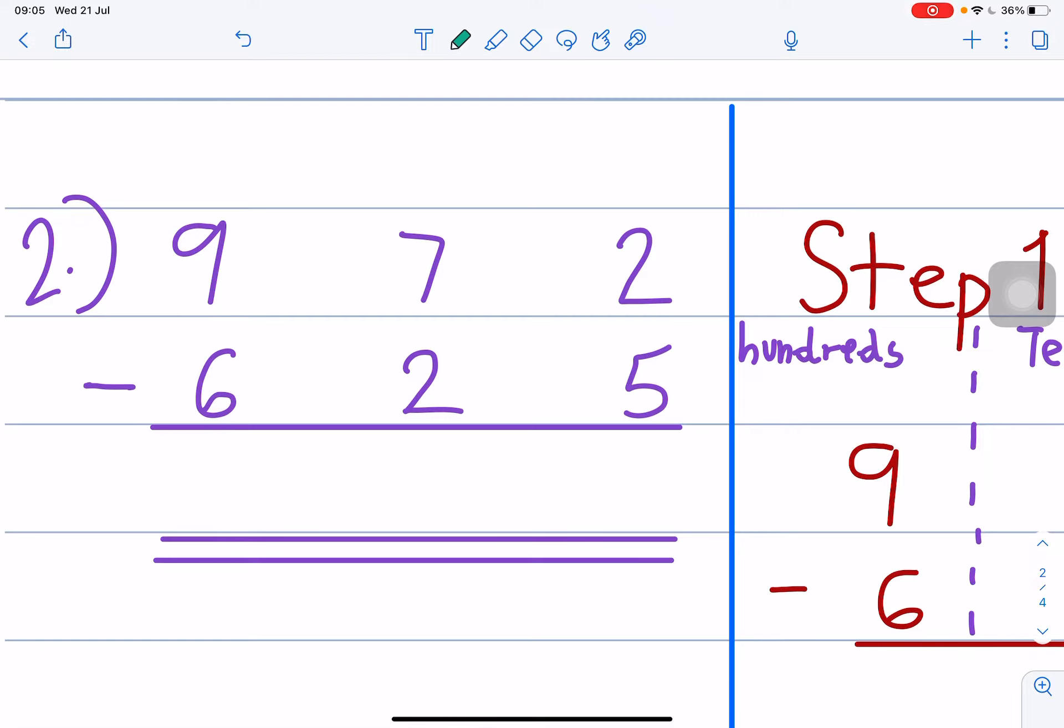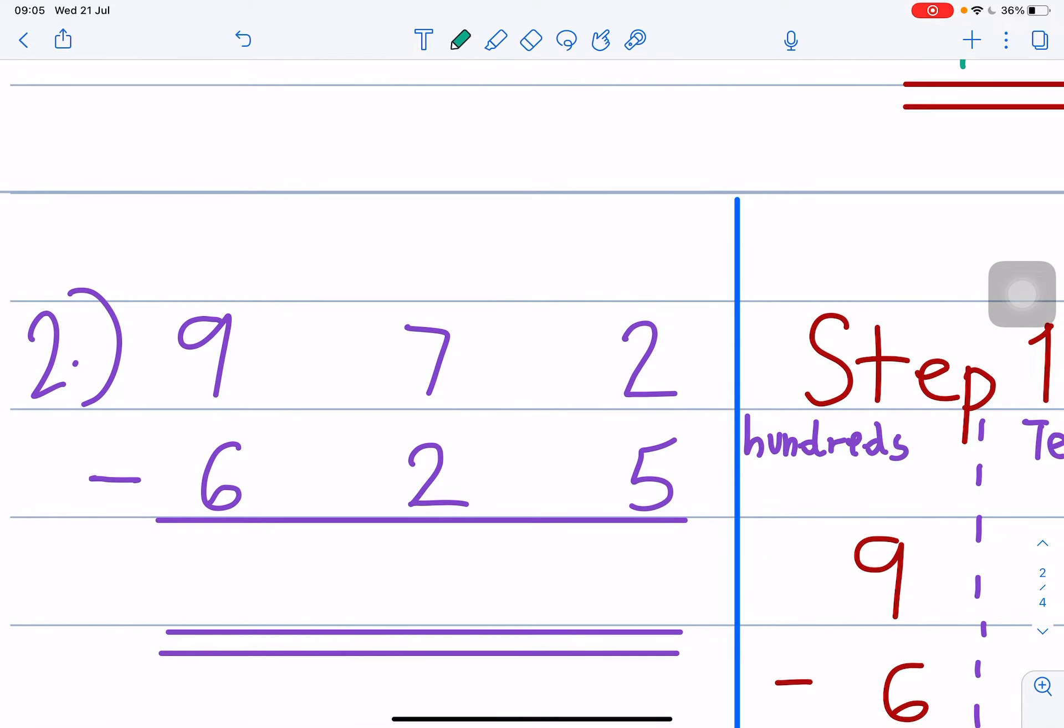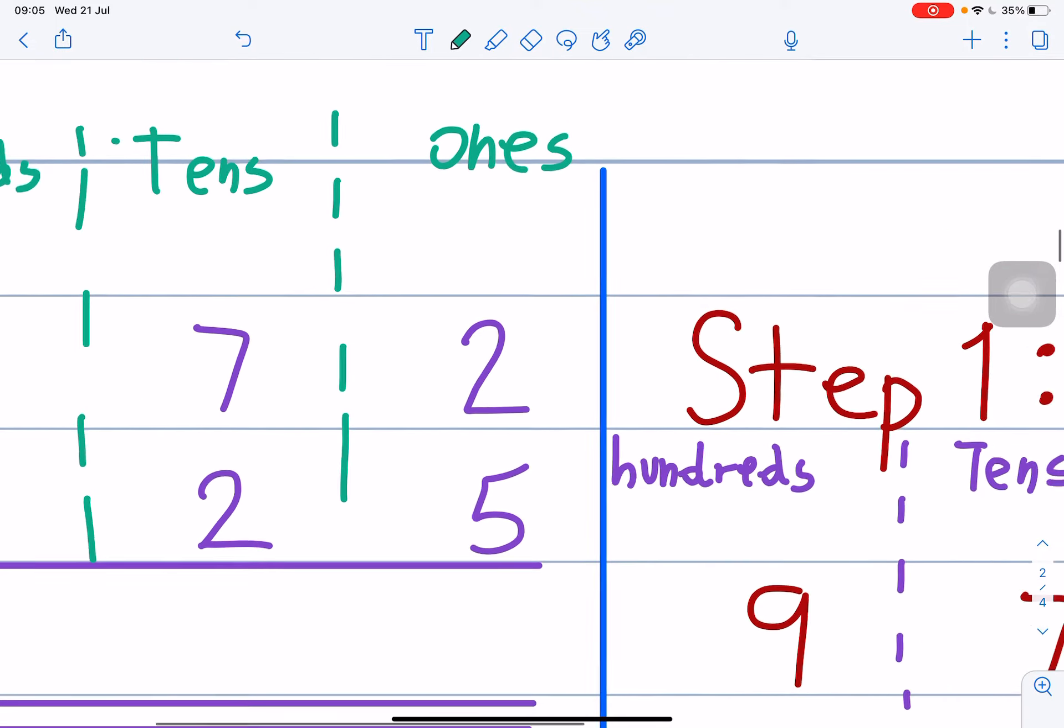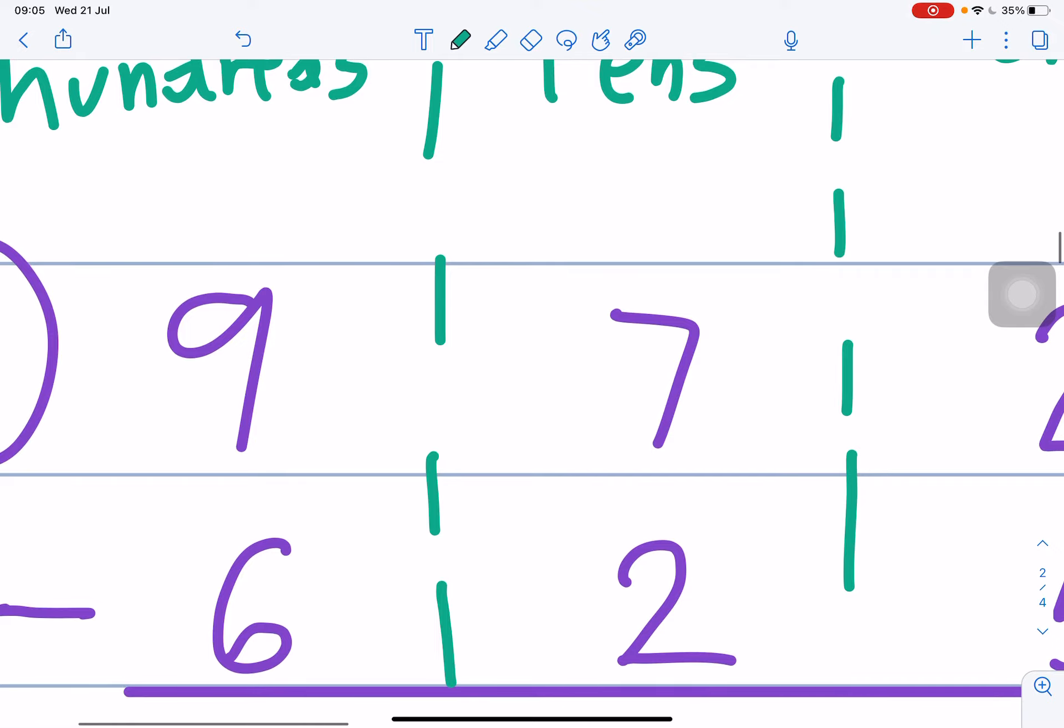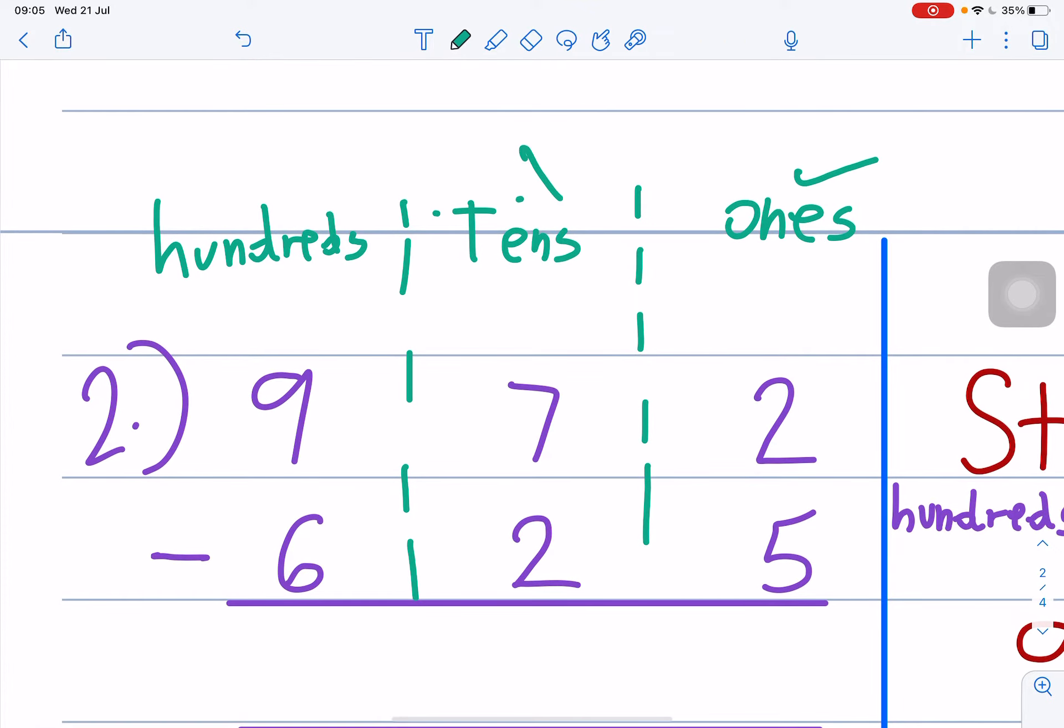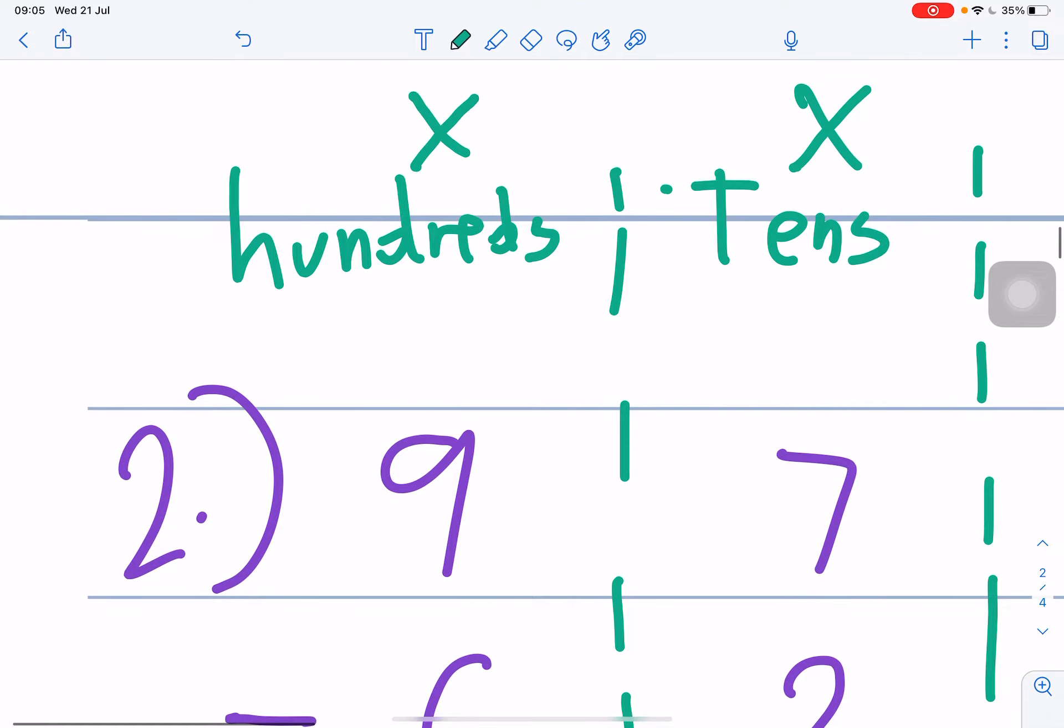Number 2 is 972 minus 625. Students, look. Look carefully. Once. Tens. Hundreds. Borrow. Which one? Once. Okay, you see? 2 minus 5. Yes. Borrow. Tens. 7 minus 2. No borrow. 9 minus 6. No borrow.